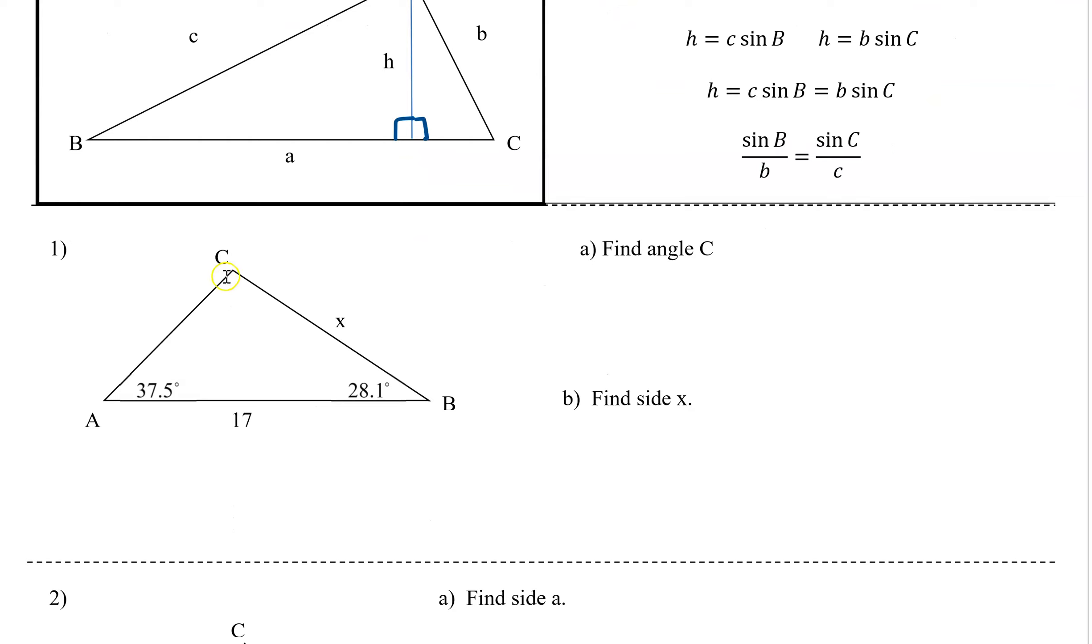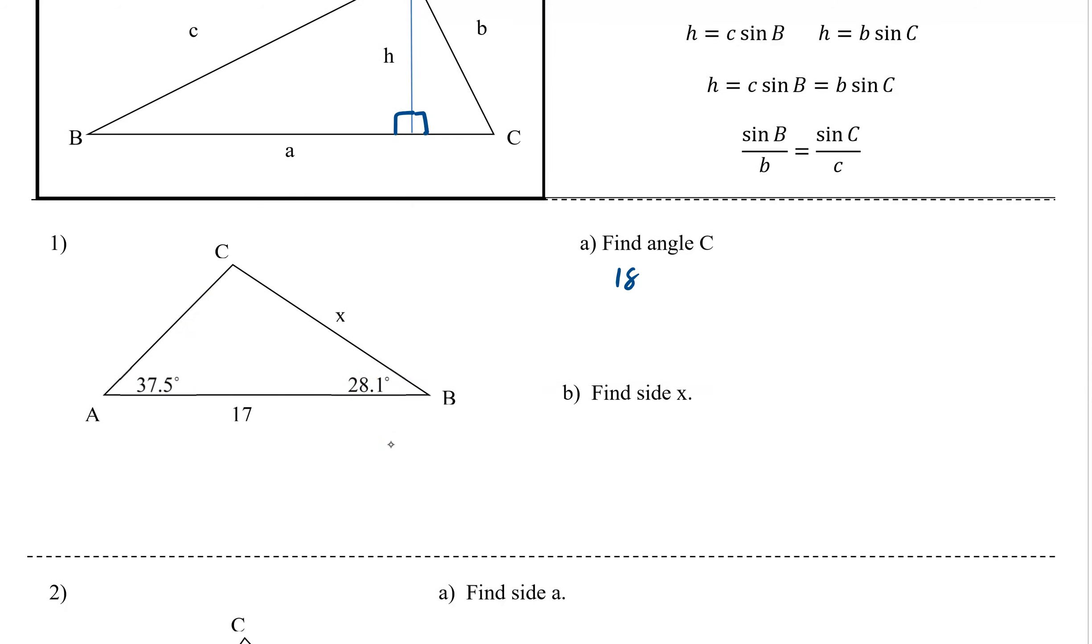How do we use this? The first thing you want to do is fill in a triangle. We already know that interior angles of a triangle add up to 180. So we know that 180, take away 37.5 degrees, take away 28.1 degrees would give us our angle C. That means C would equal 114.4 degrees. Now we can fill that in.